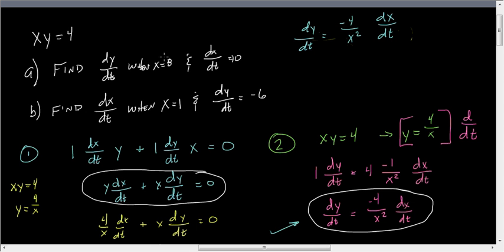Simply plug in x equals 8. So now I have negative 4 over 64, which is negative, no, 1 over 16. And dx/dt is 10. So it's 10, negative 10 over 16, which is negative 5 eighths.